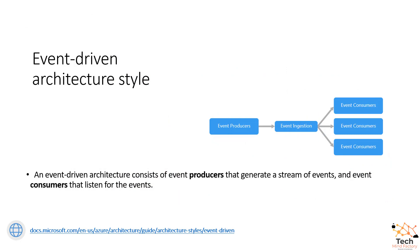What is event-driven architecture style? To make it simple, an event-driven architecture consists of event producers — those who produce and generate a stream of events. And then, on the other side, there are consumers — those who listen for these events and can take some actions.